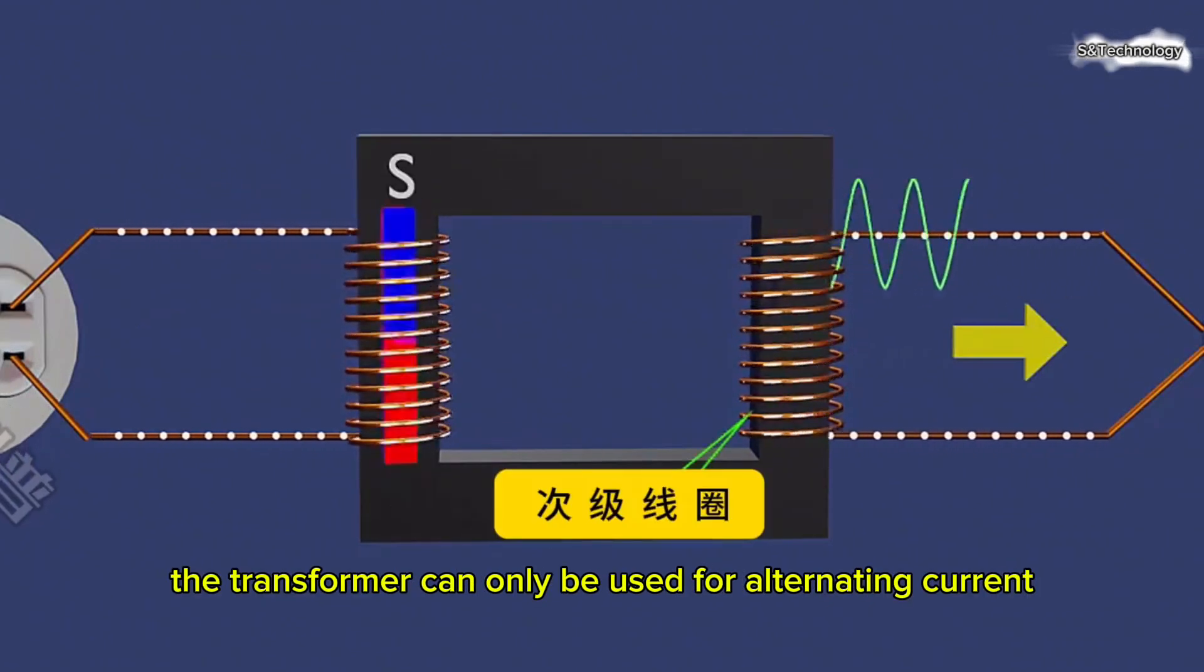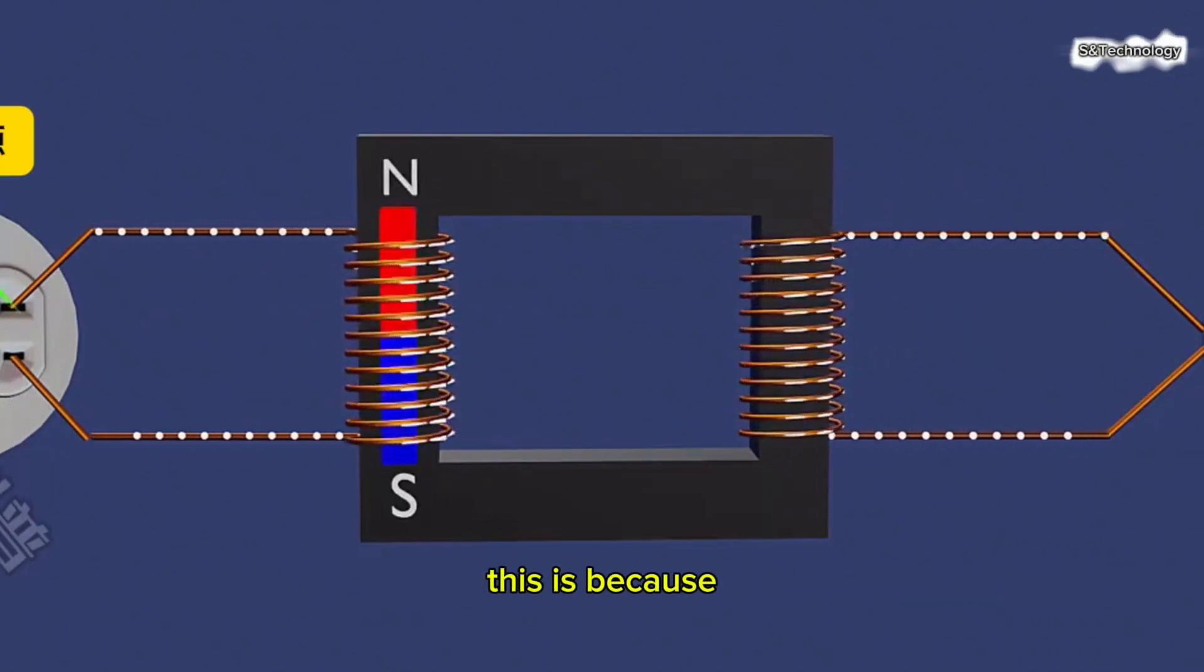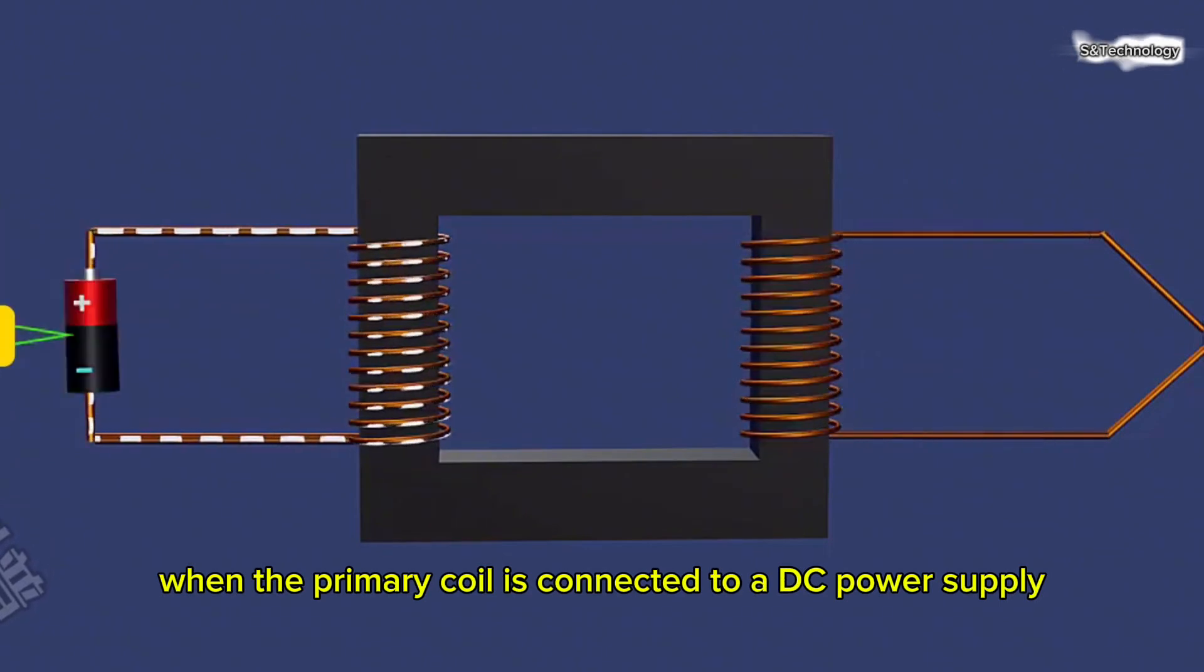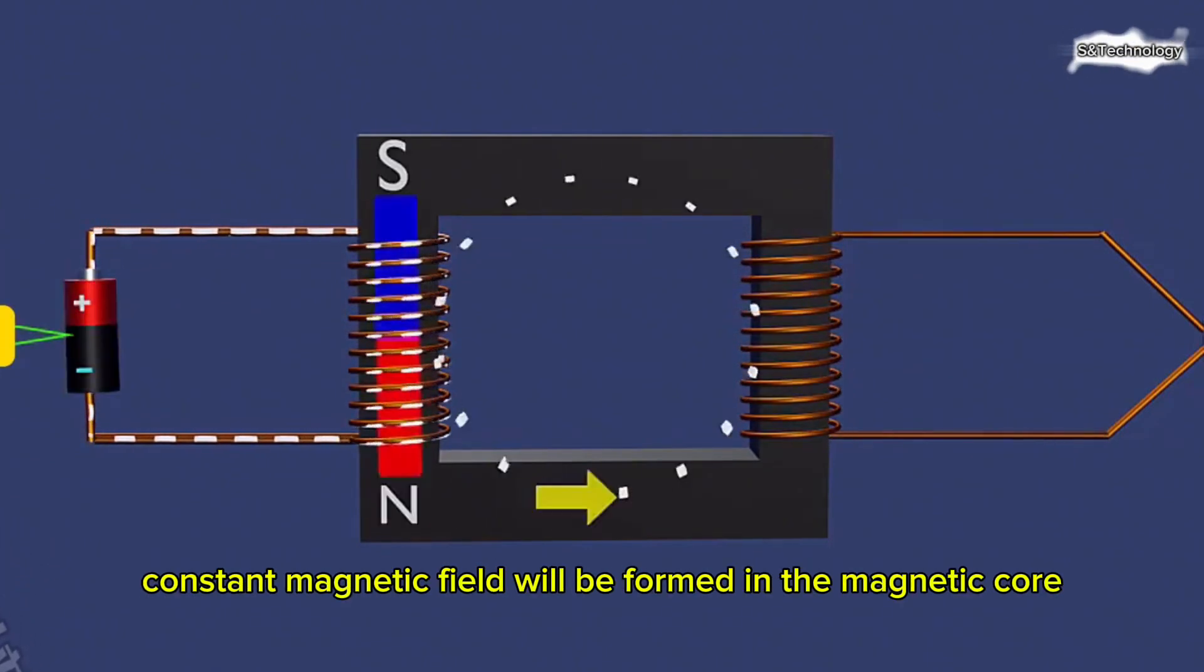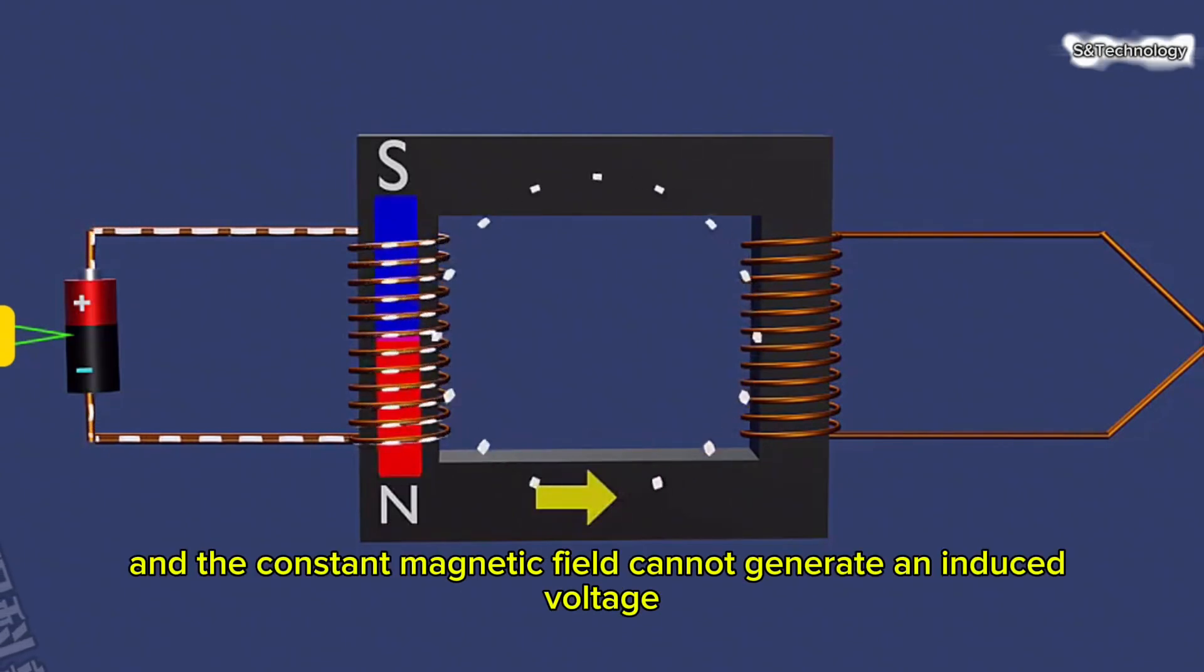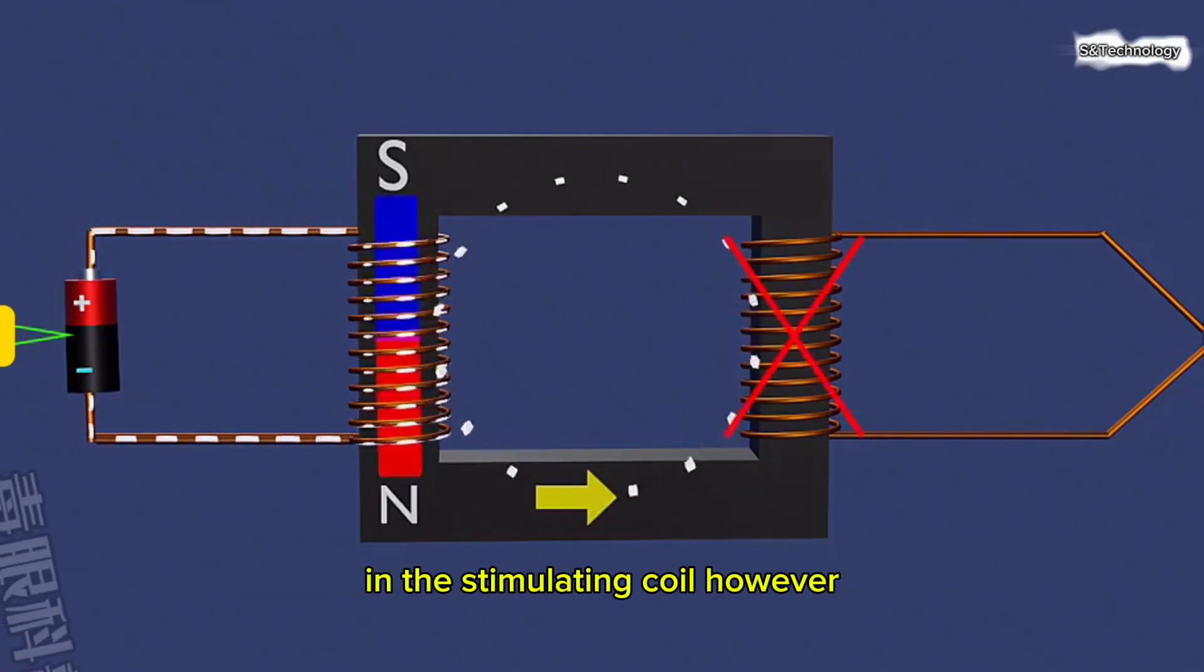The transformer can only be used for alternating current and not for direct current. This is because when the primary coil is connected to a DC power supply, a constant magnetic field will be formed in the magnetic core of the transformer, and the constant magnetic field cannot generate an induced voltage in the secondary coil.